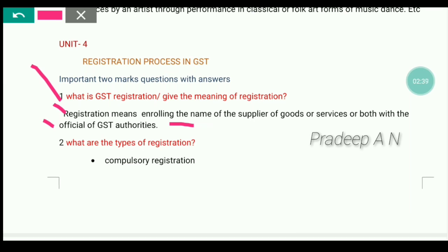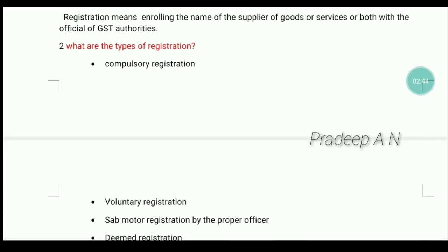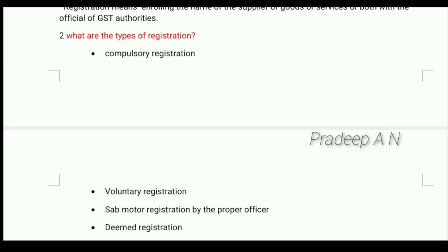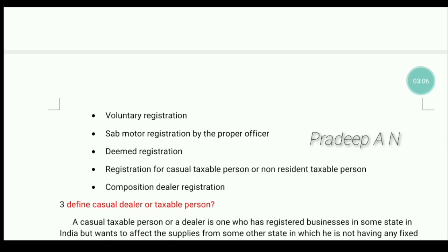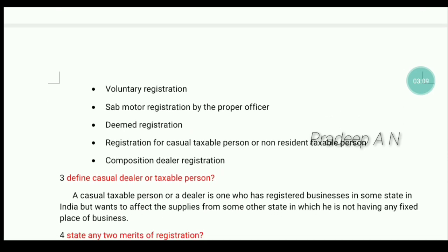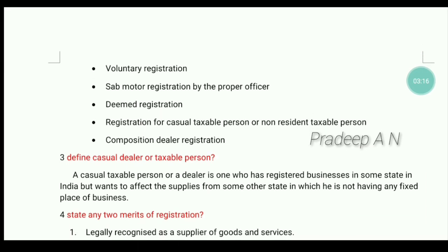Next one: what are the types of GST registration? The types are: GST registration, suo-moto registration, deemed registration, registration for casual taxable person or non-resident taxable person, and composition dealer's registration.